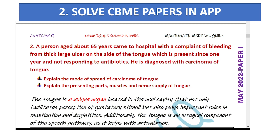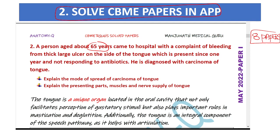Tip two: solve CBME papers in the app. Go through the previous CBME papers — there are eight papers. You need to solve all eight papers thoroughly. For example, a recent exam question: a person aged about 65 years came to hospital with a complaint of bleeding from a thick large ulcer on the side of the tongue, present since one year, not responding to antibiotics. He was diagnosed with carcinoma of the tongue — explain the mode of spread, presenting parts, muscles, and nerve supply of the tongue.